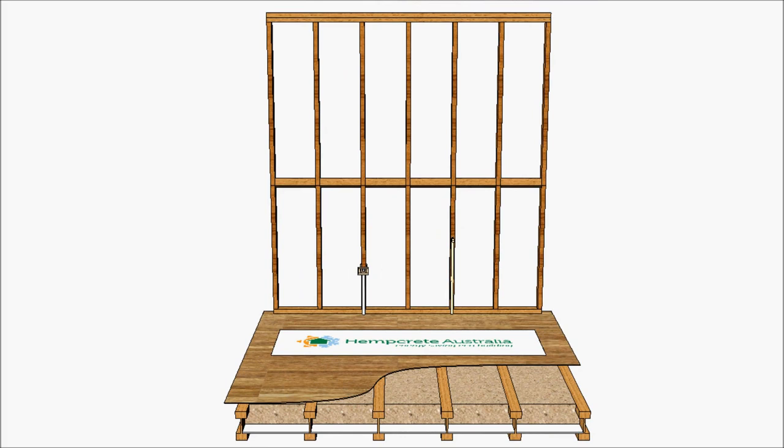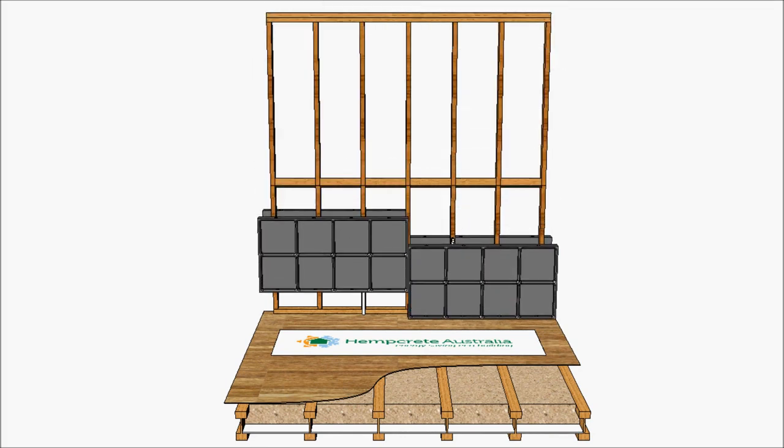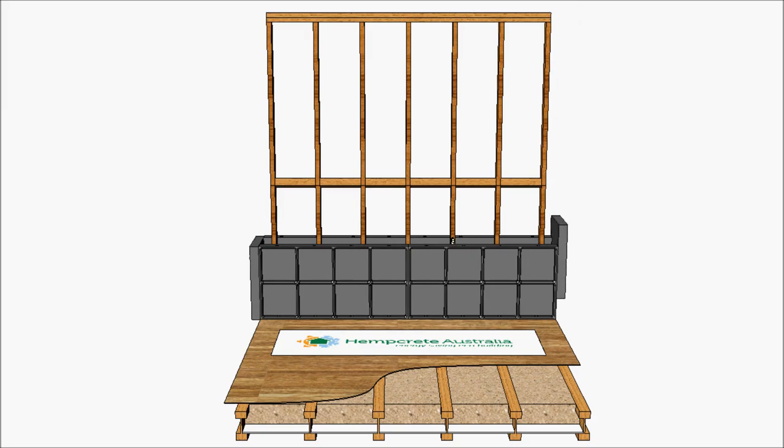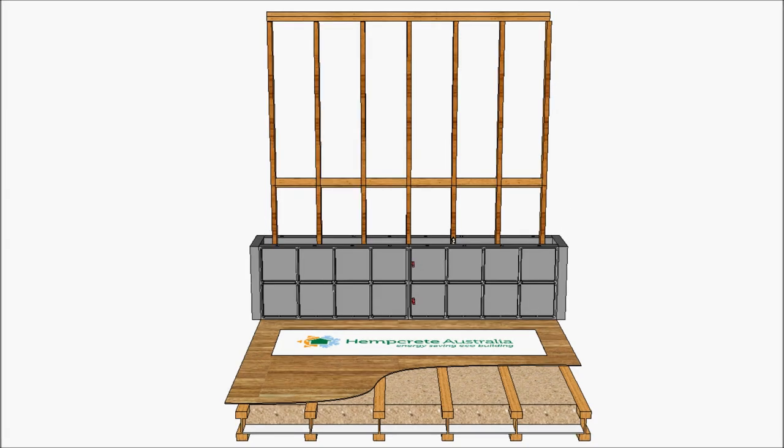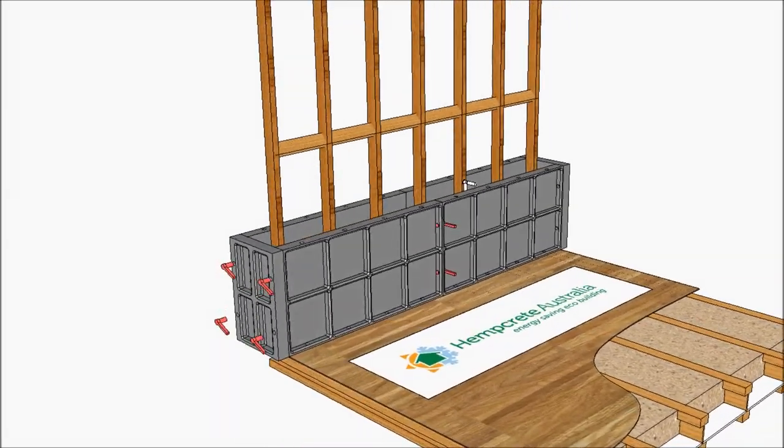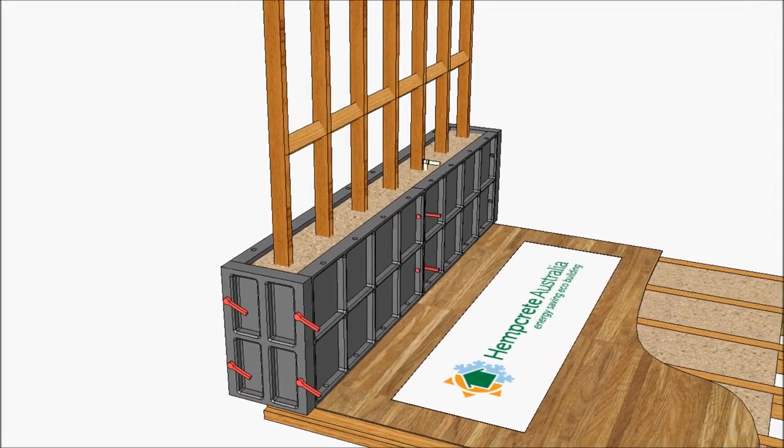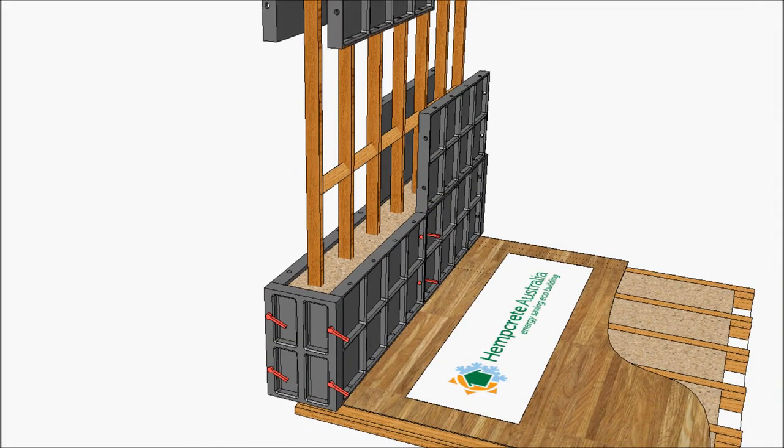To create the wall, we use recycled plastic formwork that easily assembles. The hemp wood, lime, binder and water are mixed and placed into the formwork surrounding the load-bearing frame.